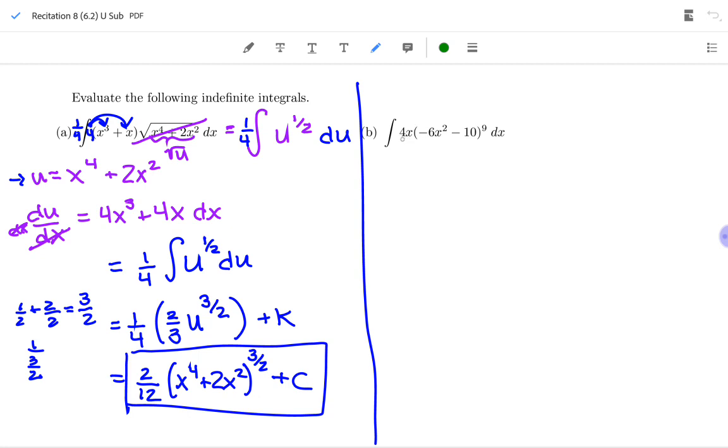So I'm thinking, is u going to be the first factor or the second factor? Well, the second factor is raised to the ninth power, so that's the one being manipulated. So there's my u. So u is negative 6x squared minus 10.